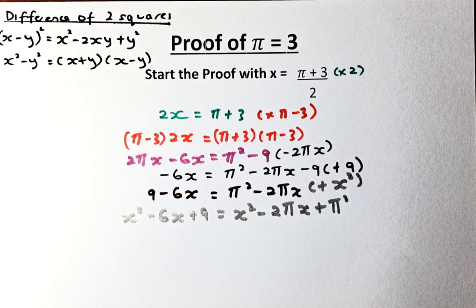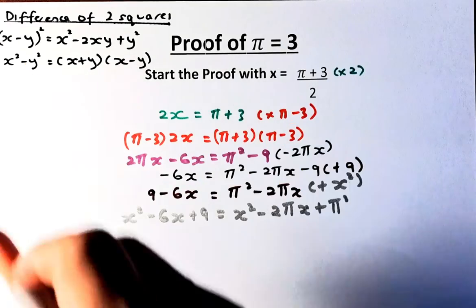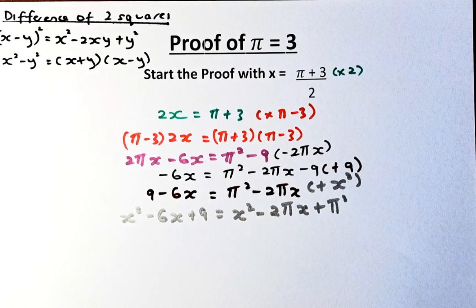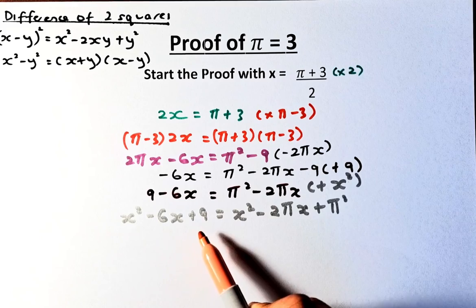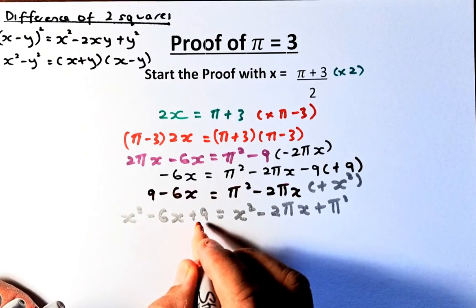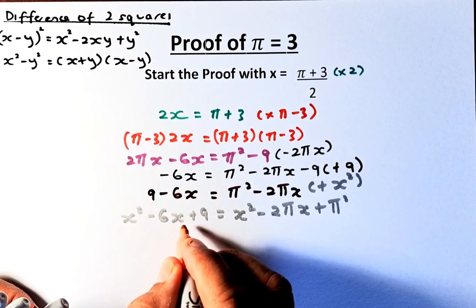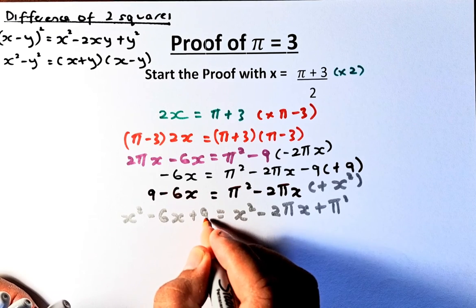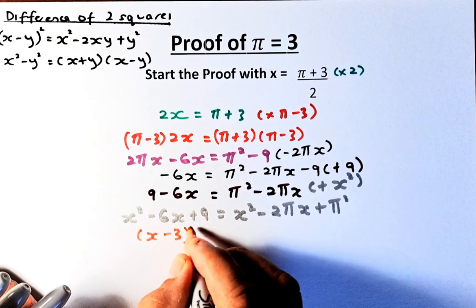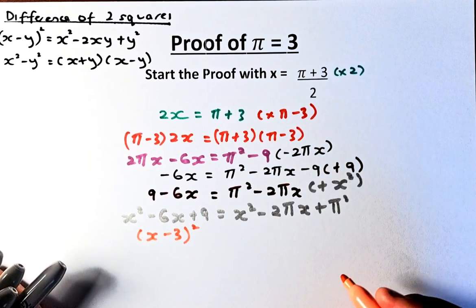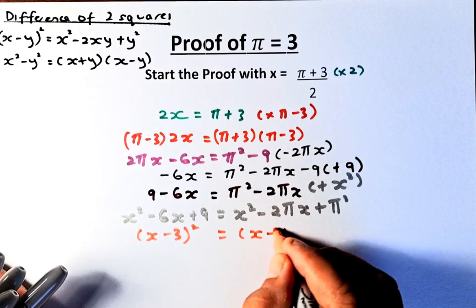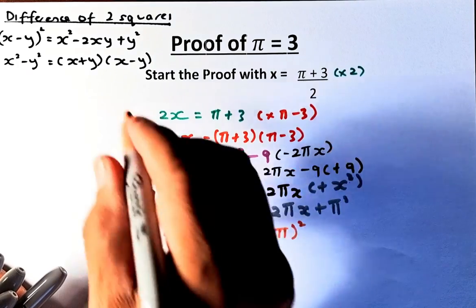We now apply the first formula — (x minus y) squared equals x squared minus 2xy plus y squared. On the left-hand side, x is x and y is 3, so 9 is 3 squared, and we can write it as (x minus 3) squared. On the right-hand side, it becomes (x minus pi) squared. When you expand each expression, you get the equations above.